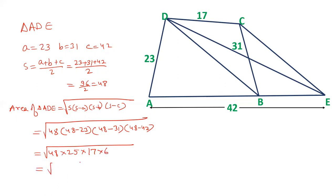Now 48 can be written as 16 into 3. 25, 17, and 6 can be written as 2 into 3. Square root of 16 is 4, square root of 25 is 5. And 3 is twice, so one 3 we can take out as a square root. Now we have two numbers left, 17 and 2. We will multiply this, 34.